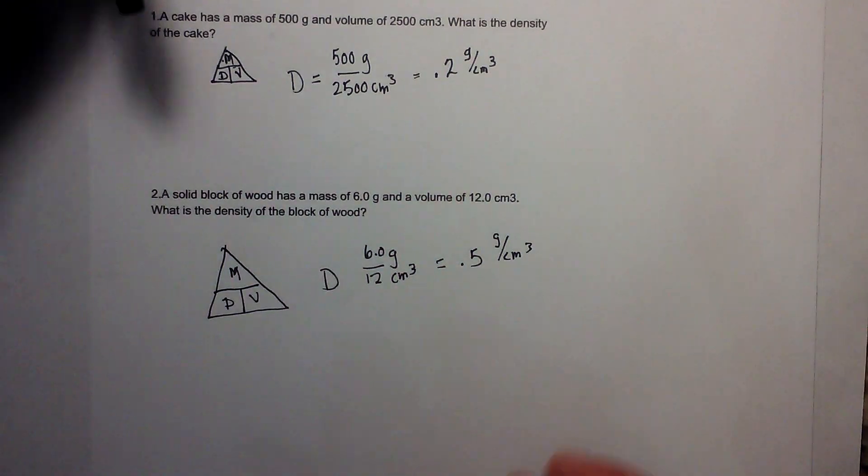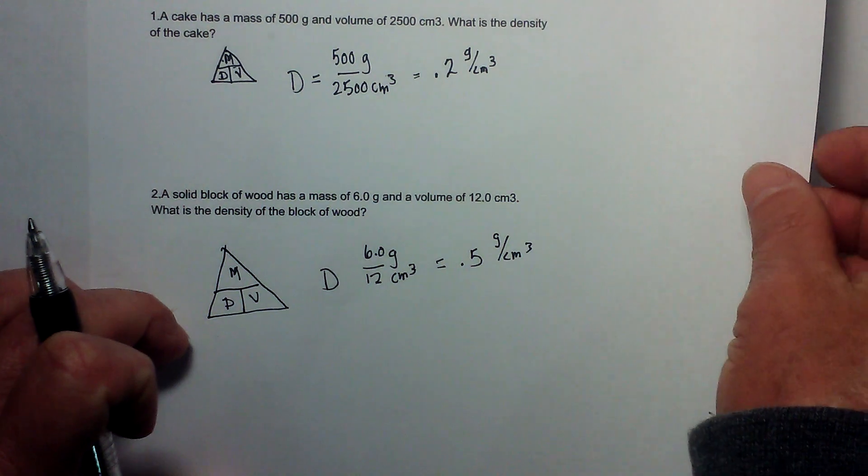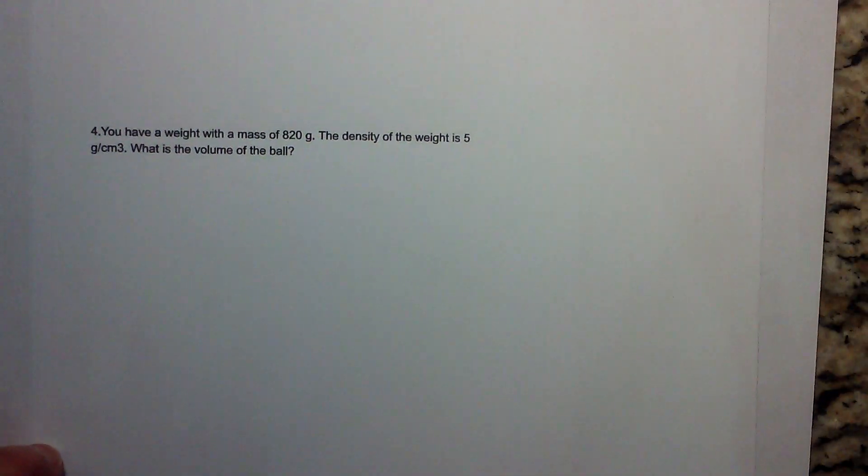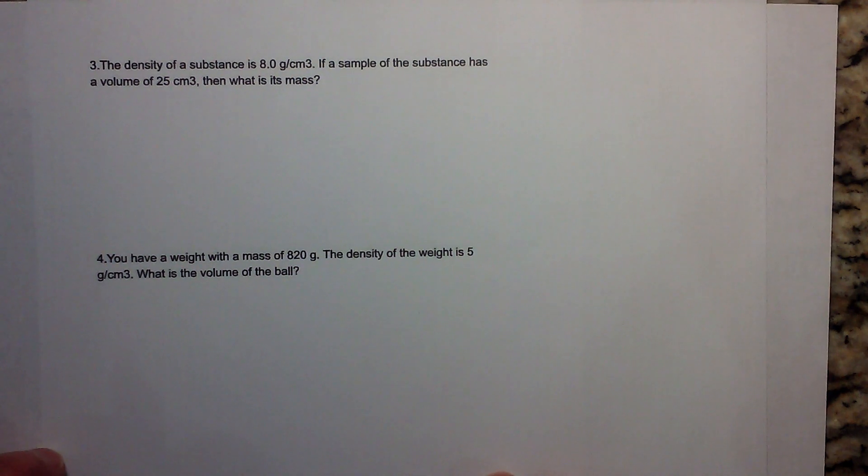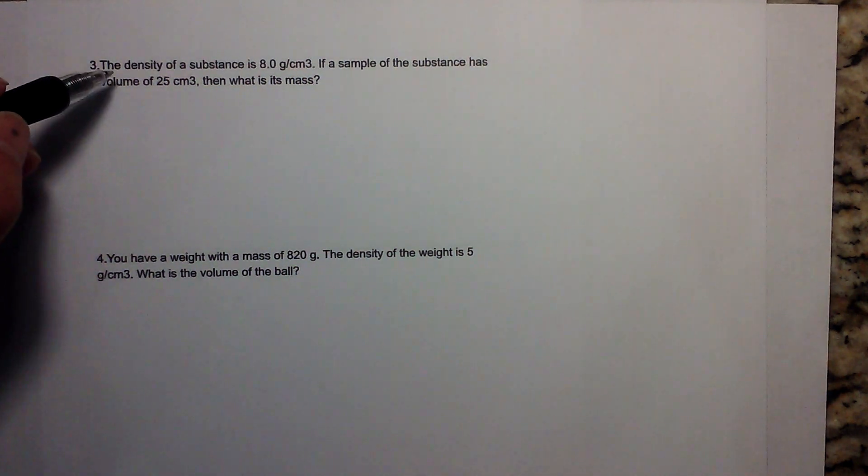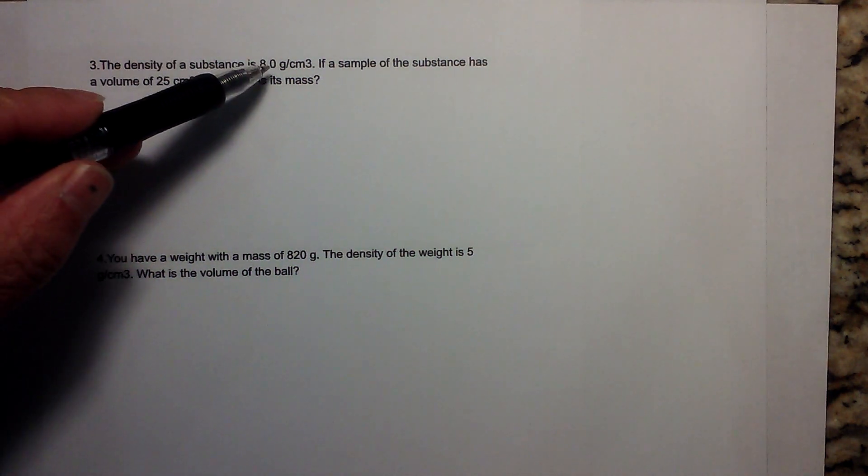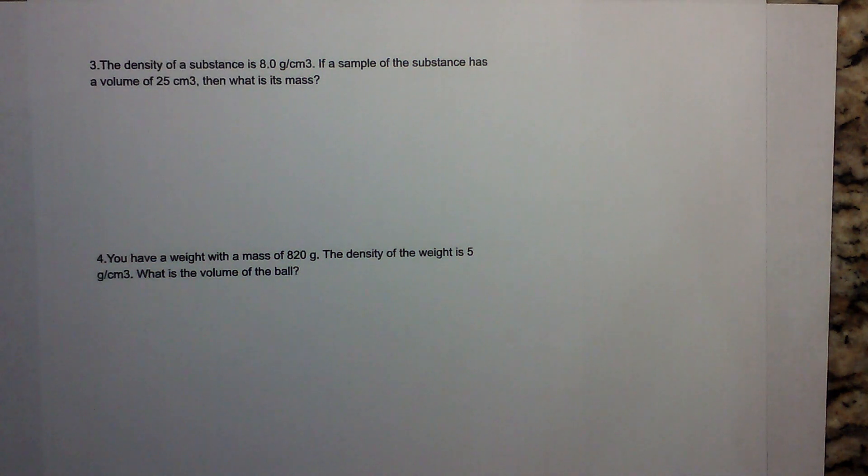Now we'll see how this triangle can come into business when we work a couple other types of examples. The density of a substance is 8 grams per centimeters cubed. If a sample of the substance has a volume of 25 centimeters cubed, what is its mass?